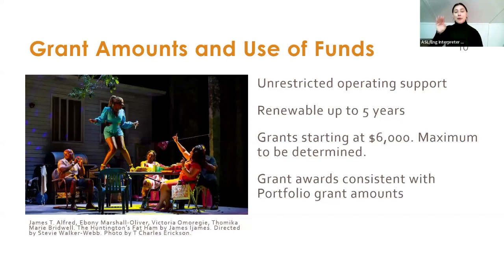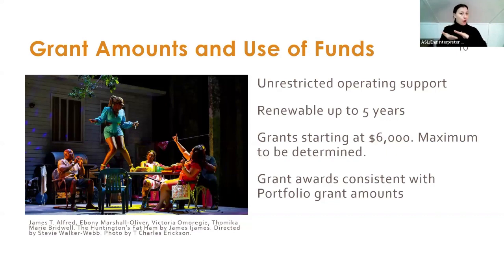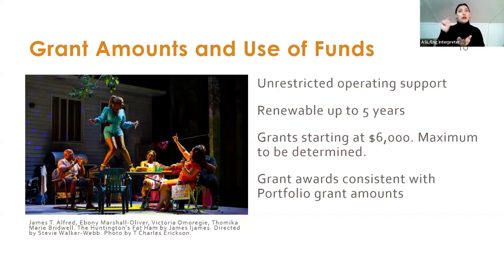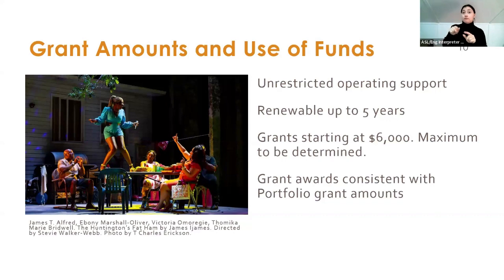The slide about grant amounts and use of funds: this is unrestricted operating support, meaning your organization can spend it for any need — paying employees, rent, utilities, toilet paper, program supplies — absolutely any expense your organization has is a legitimate expense for unrestricted operating support.